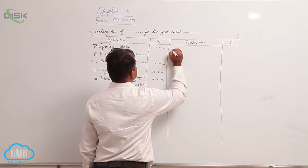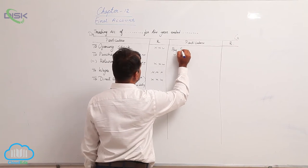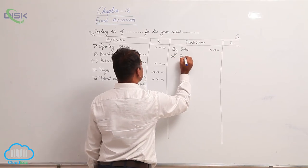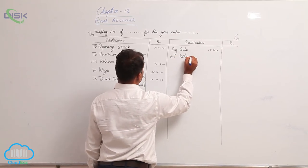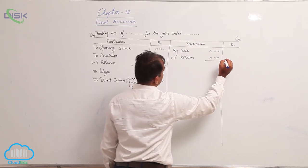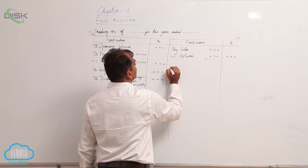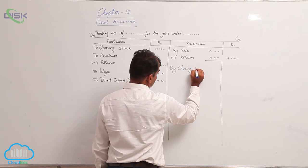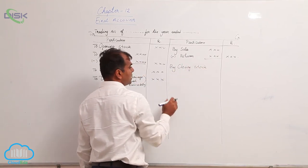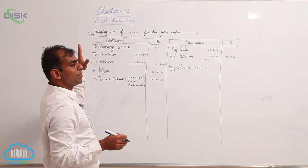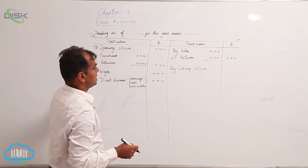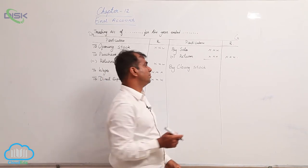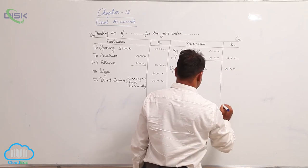On the credit side you have sales. From sales, if returns are given - sales returns - you minus sales returns. The net sales would be going to outer column. Then on the credit side you will also have closing stock if it exists, and provided you have not adjusted the purchases. When opening stock is there on the debit side, there is a possibility of closing stock appearing on the credit side.